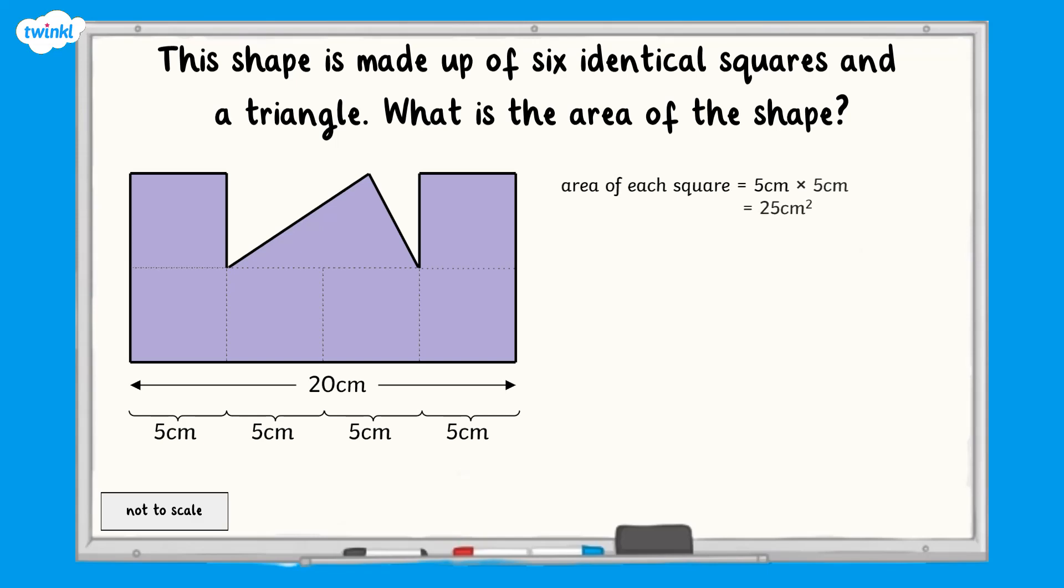There are 6 squares in total within the shape. So the area of the squares in total is 25 multiplied by 6, which equals 150 cm squared.